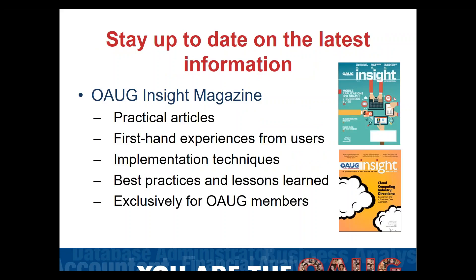We also want to help you stay up to date with what is happening and coming out of Oracle. One of the best ways to do this is by receiving and reading the OAUG Insight magazine. This magazine is one of our highest-rated member benefits. Insight magazine is produced quarterly and we send member organizations ten hard copies, but you can also access it on the website. There are a whole variety of articles — it comes from a variety of different individuals and businesses and it is exclusively for OAUG members.